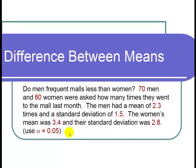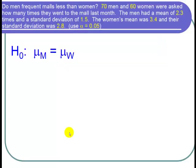So let's start with the null hypothesis. We want to find out if men frequent malls less than women. And if they don't, if they're the same, then we say that H naught is that mu sub m, the population mean number of times men go to the mall, is equal to mu sub w, the population mean number of times women go to the mall.